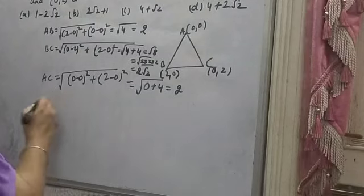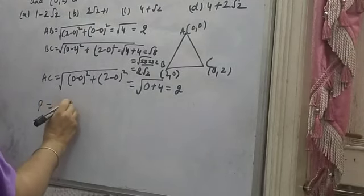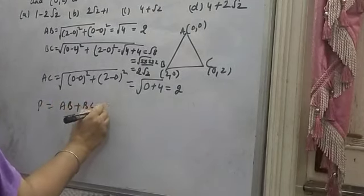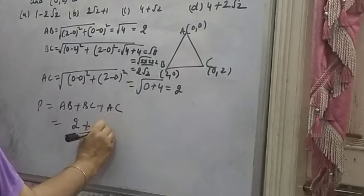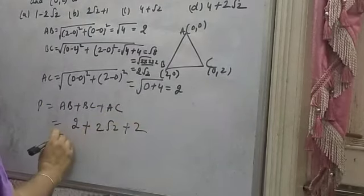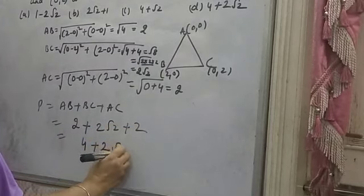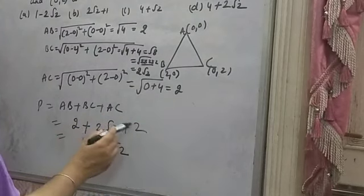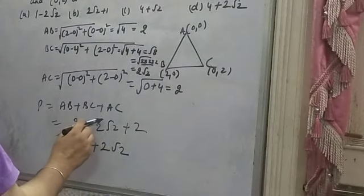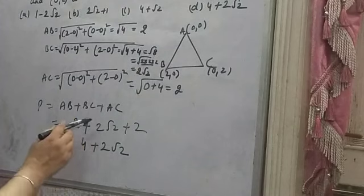Perimeter is sum of all the sides: AB plus BC plus AC. AB is 2, BC is 2 root 2, AC is 2. 2 plus 2 is 4, so 4 plus 2 root 2.